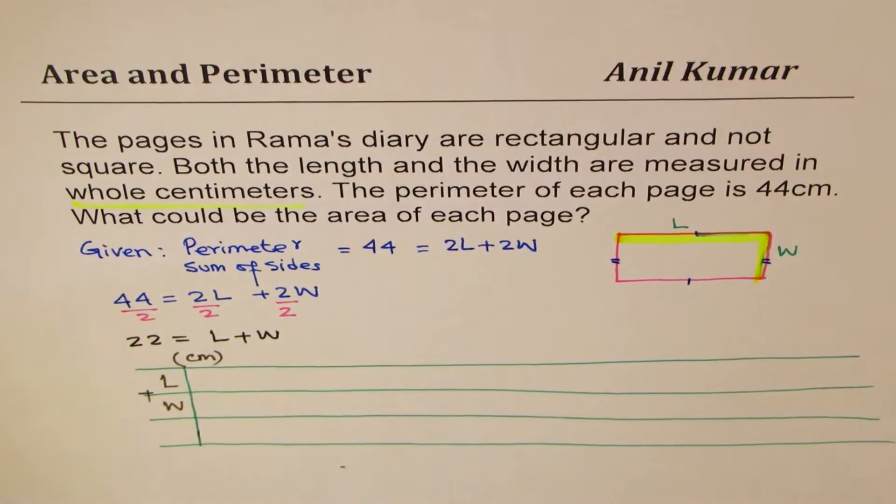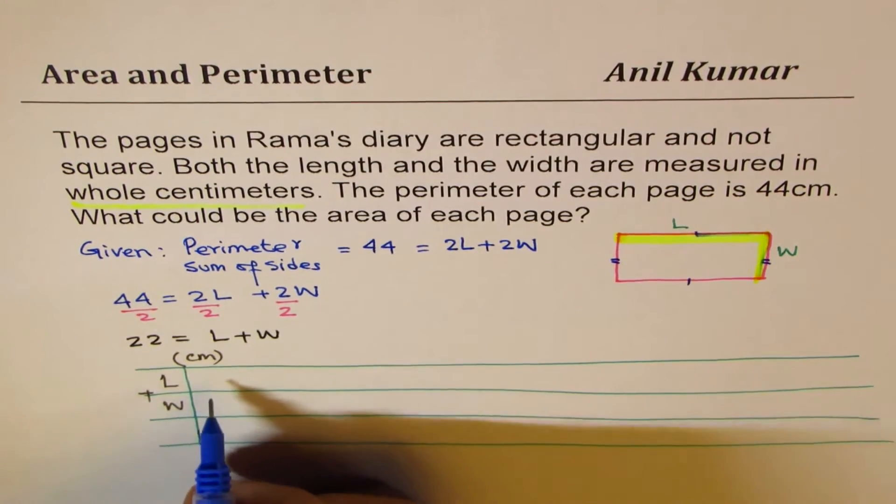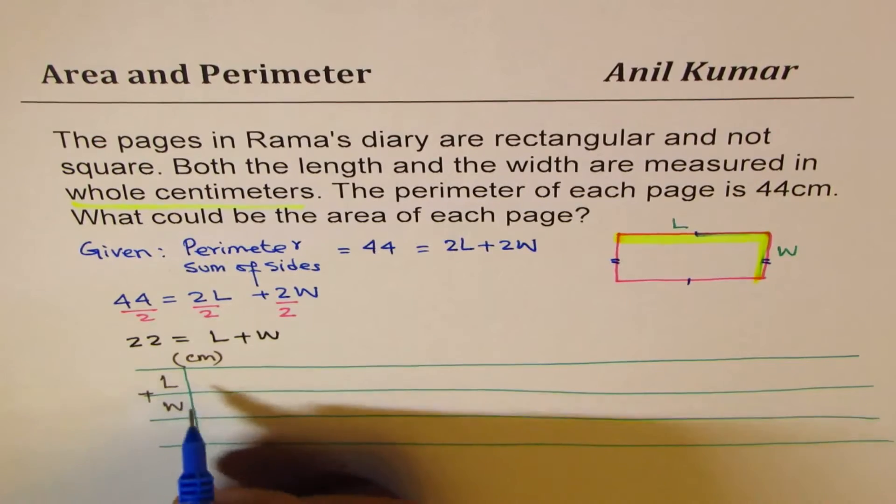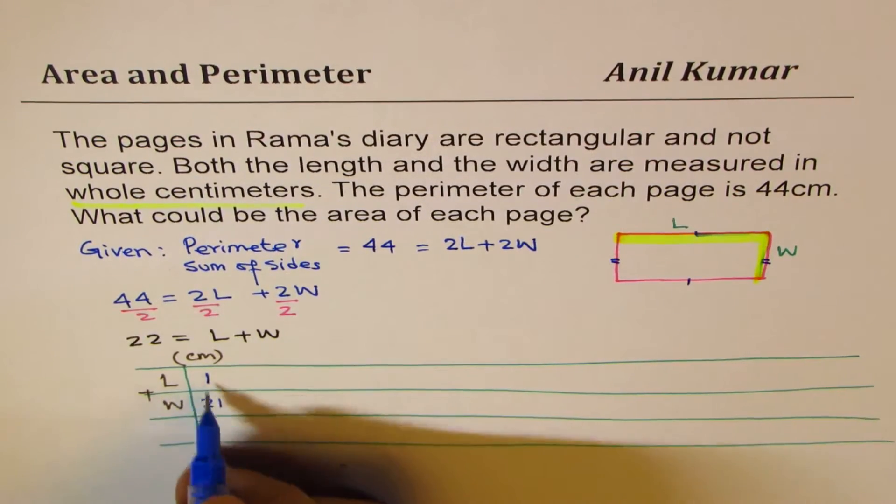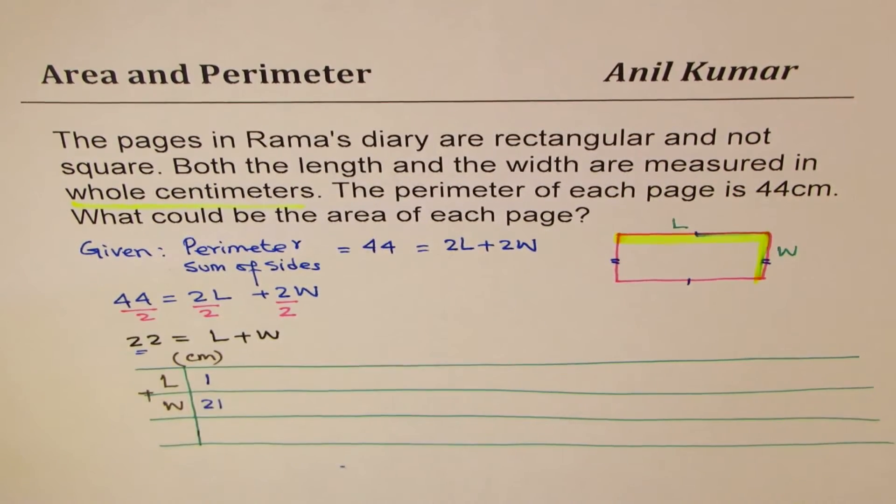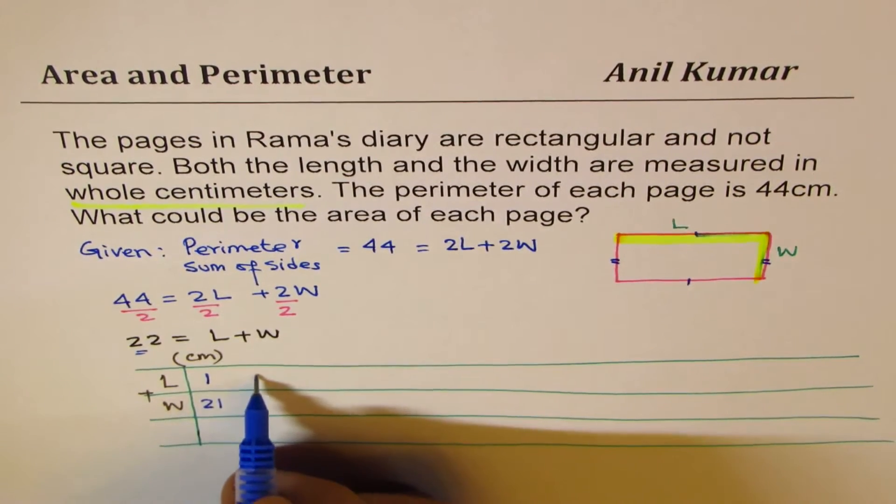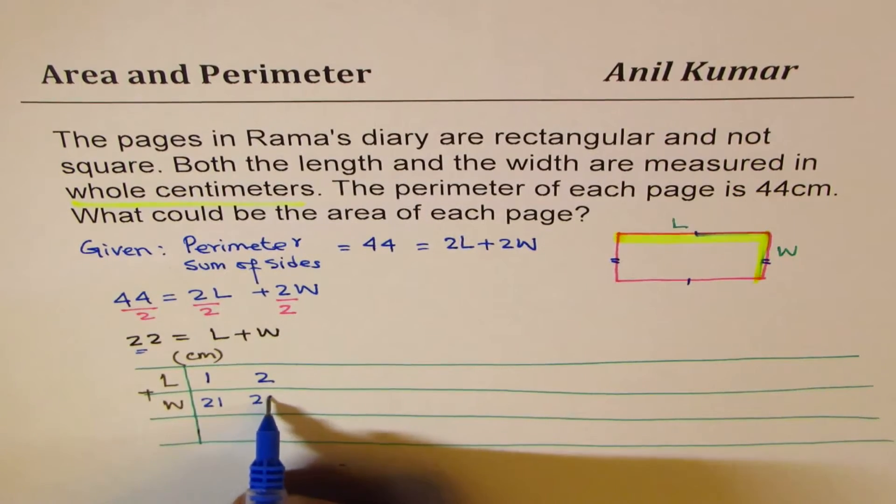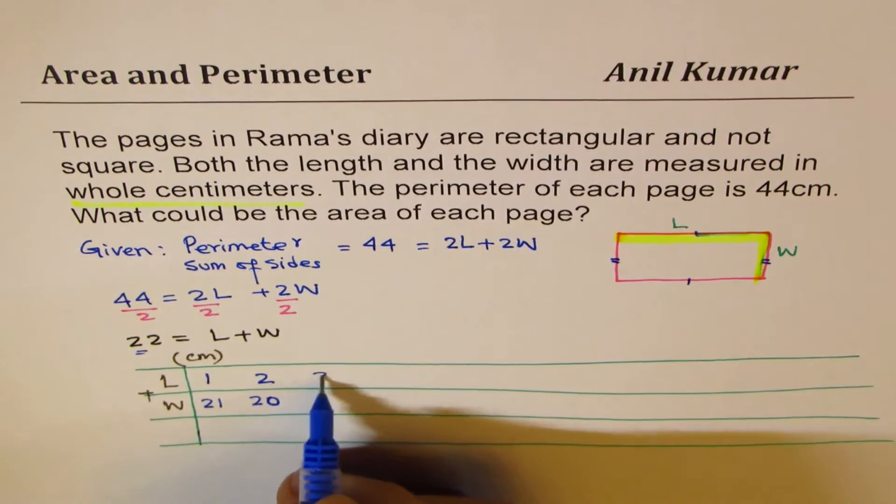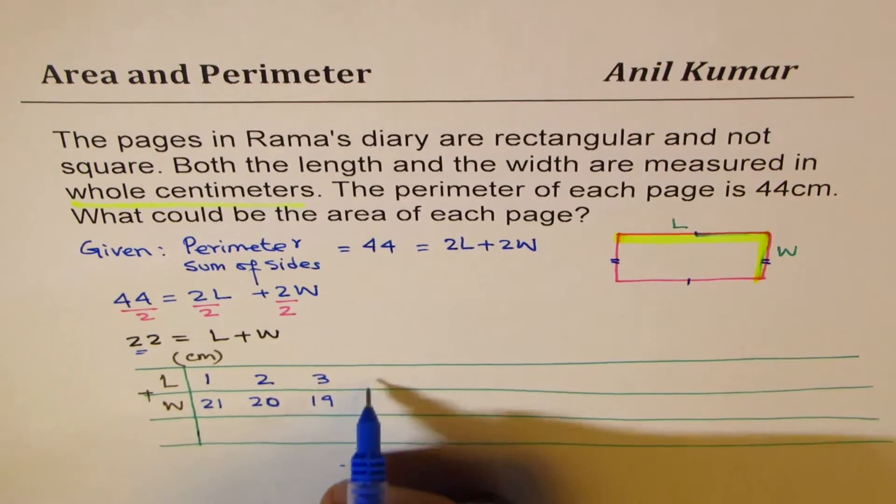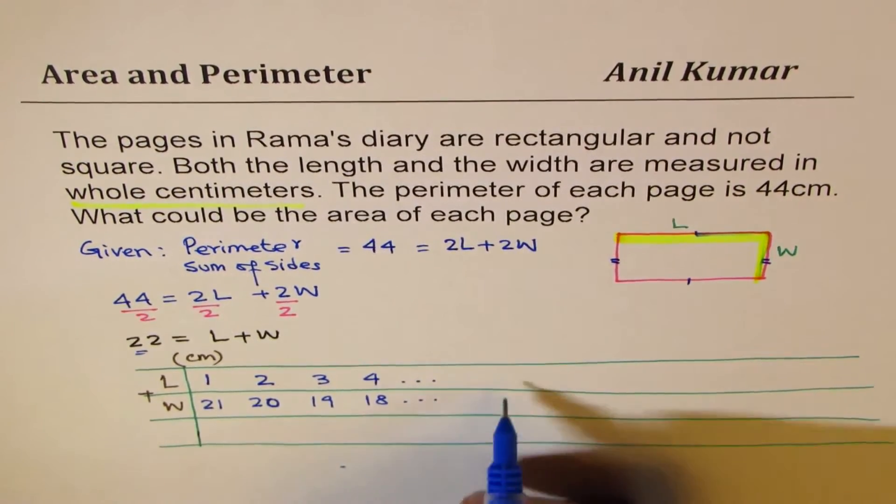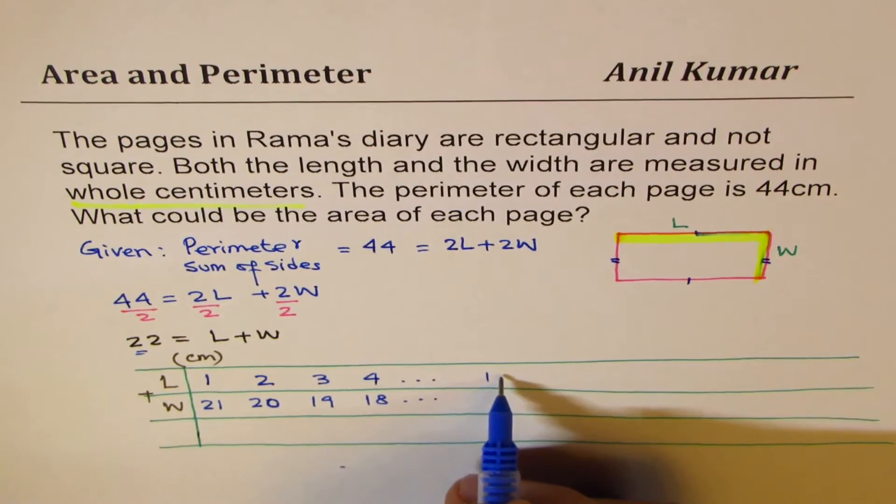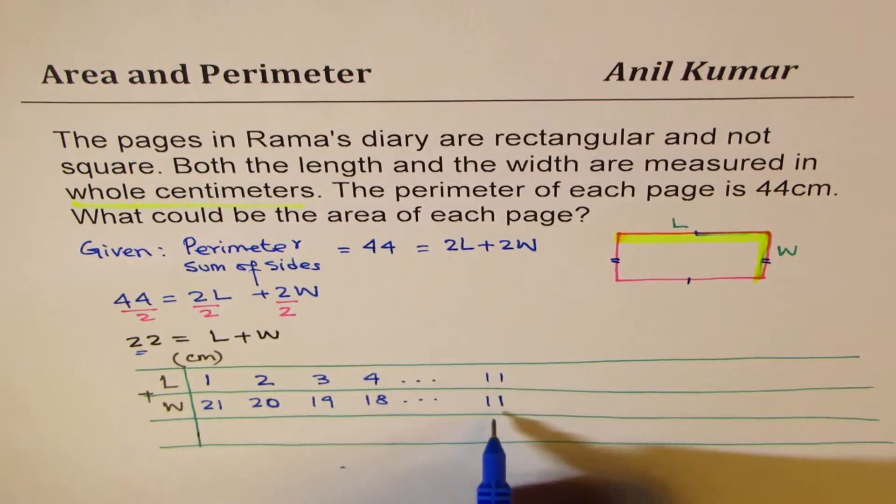We should start with 0 or 1. I think 1 is okay. Zero means no rectangle. So if length is 1, width should be 21. So 21 plus 1 is 22. Now if I take this as 2, then this becomes 20. So likewise, you can just add these values. Now somewhere in between, you will get 11 and 11, which is also 22.